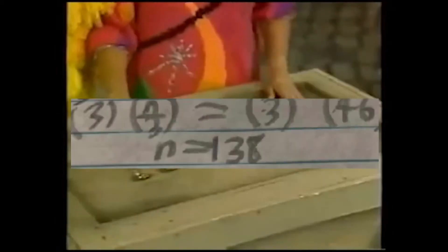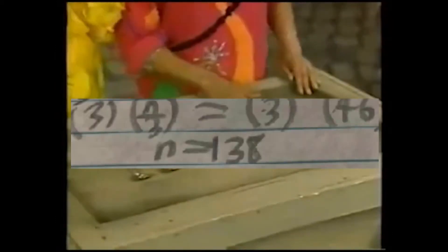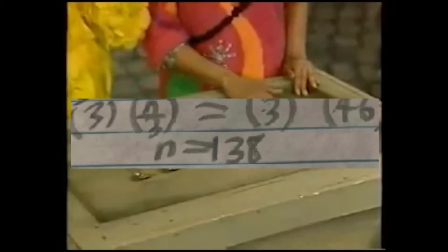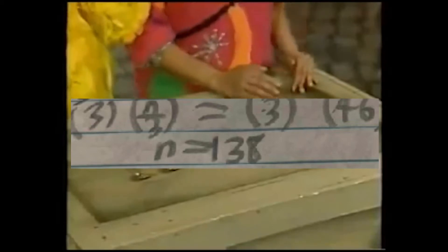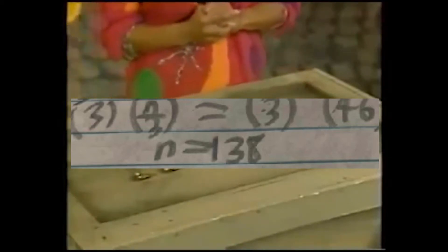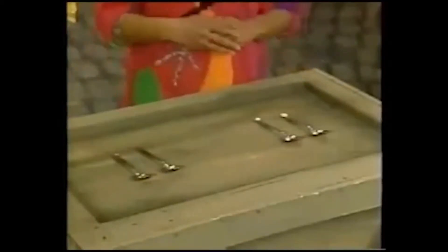Okay, let's solve n over 3 equals 46. You multiply both sides by 3 and you get n equals 138. Okay? You solve a problem.